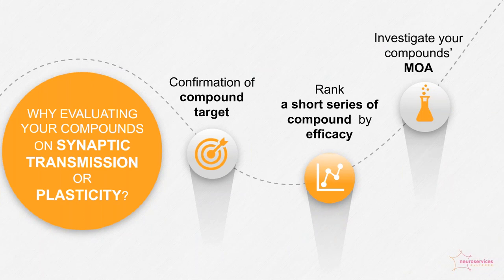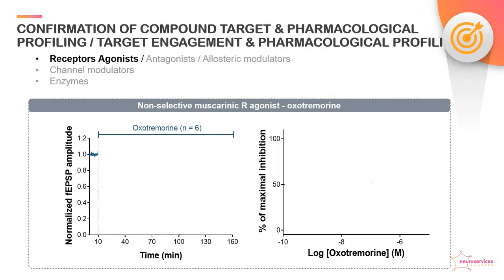Now I will illustrate with concrete data why synaptic transmission and plasticity assays are particularly suited to confirm your compound's target and document its pharmacological profile. I will also show that this assay can be used to assess the potency or efficacy of your compound or for the selection of the best compound among a short series of leads. Such assays could also be used to investigate the mechanism of action of your compound at the neuronal network level. Evaluating your compound on synaptic transmission or plasticity can be an ideal way to confirm its target in a native system.